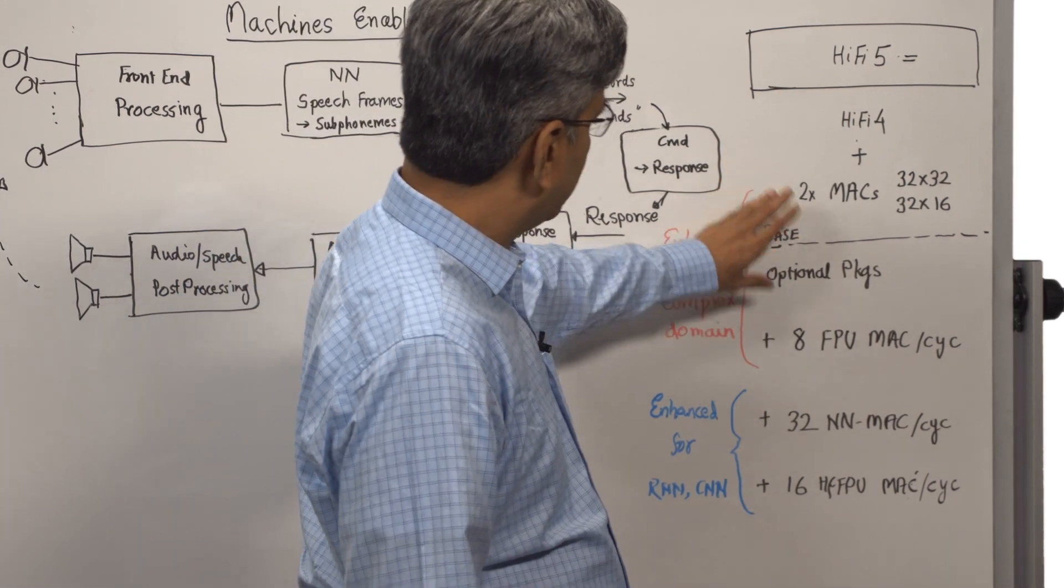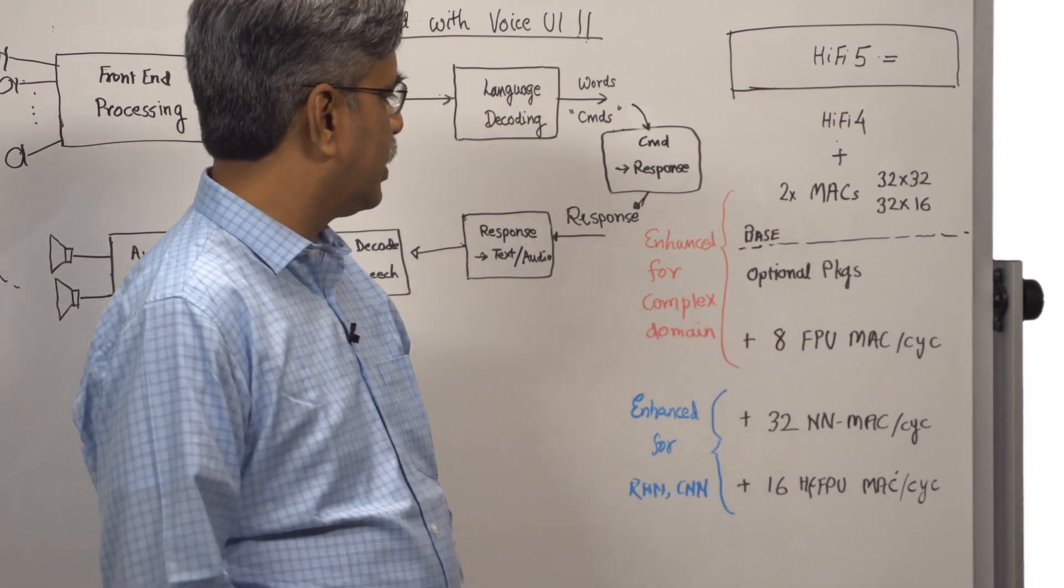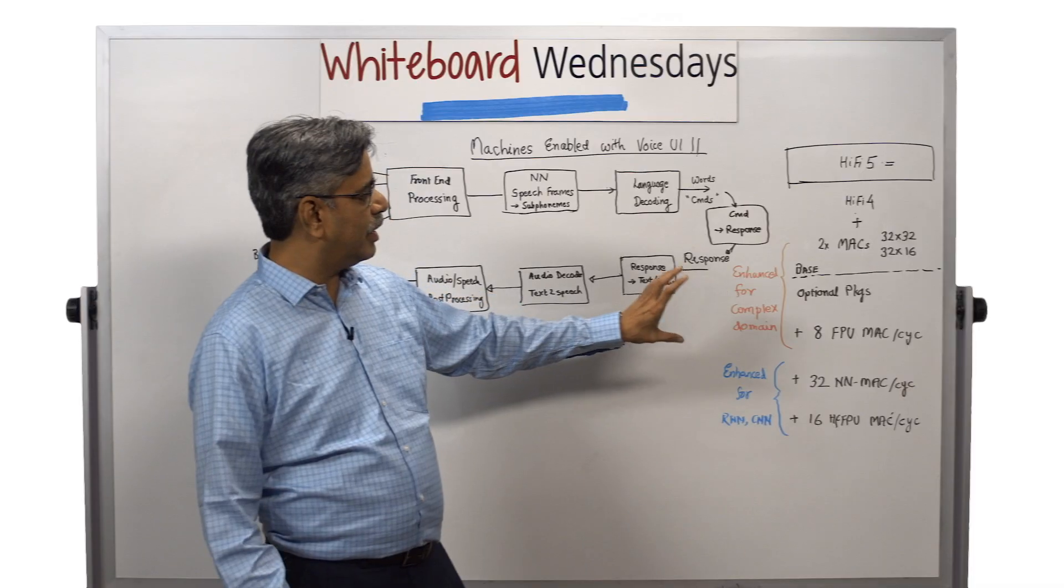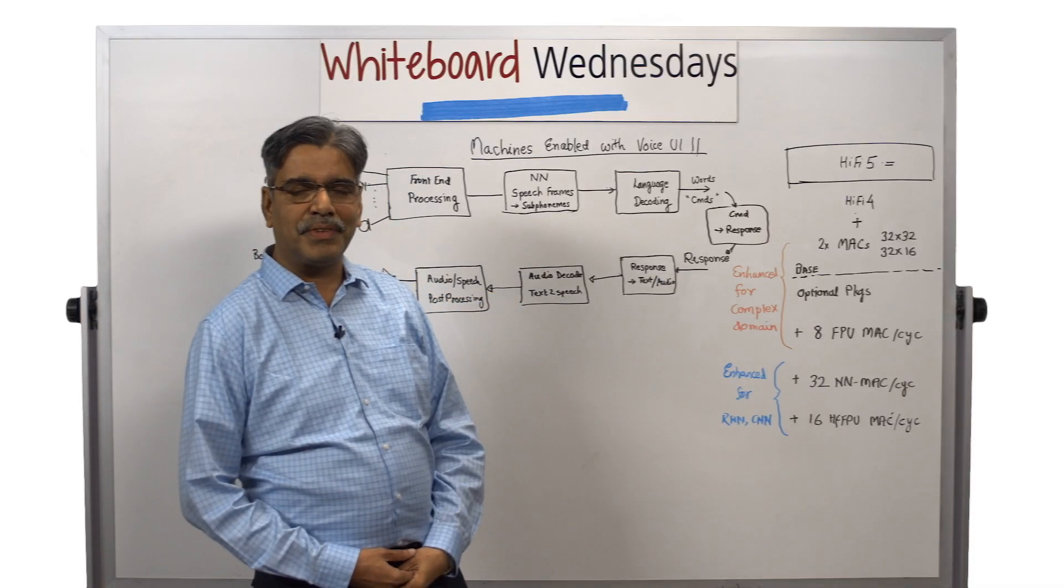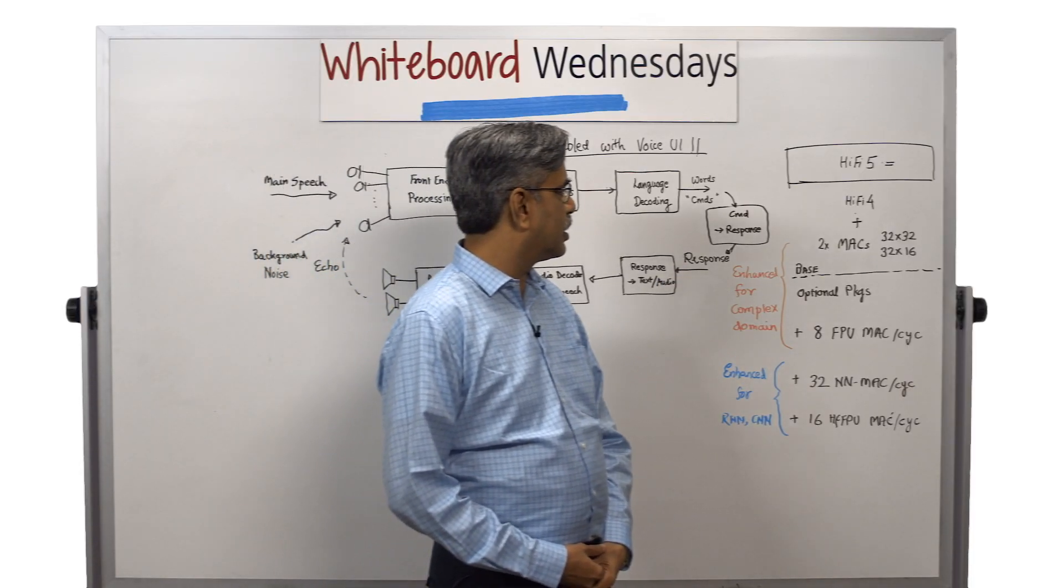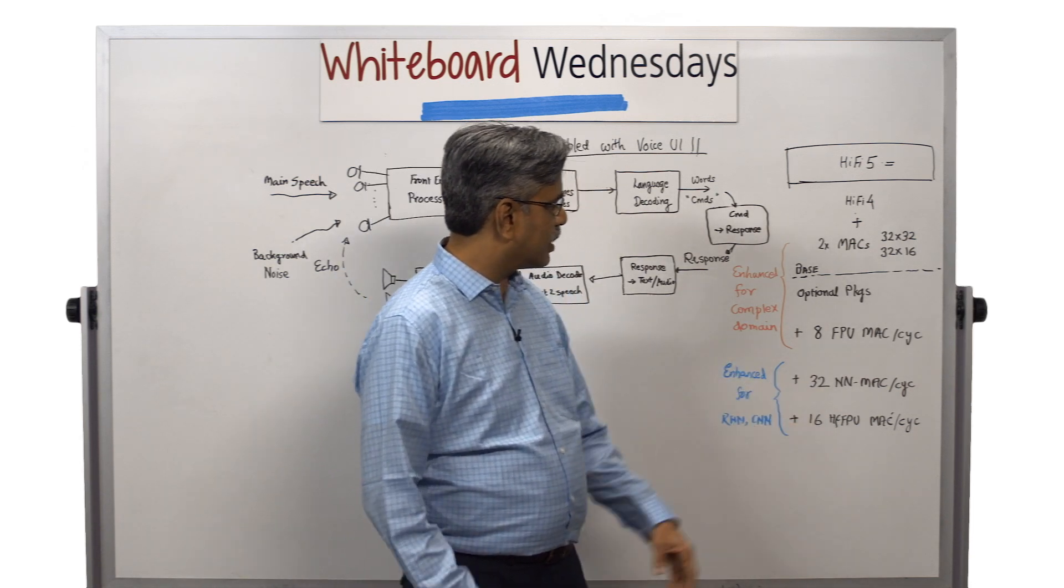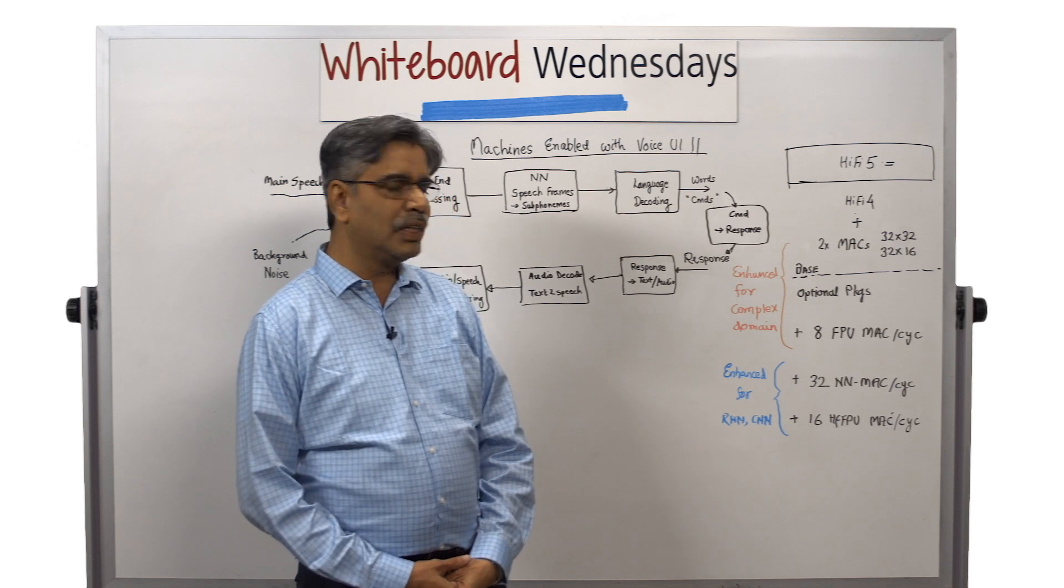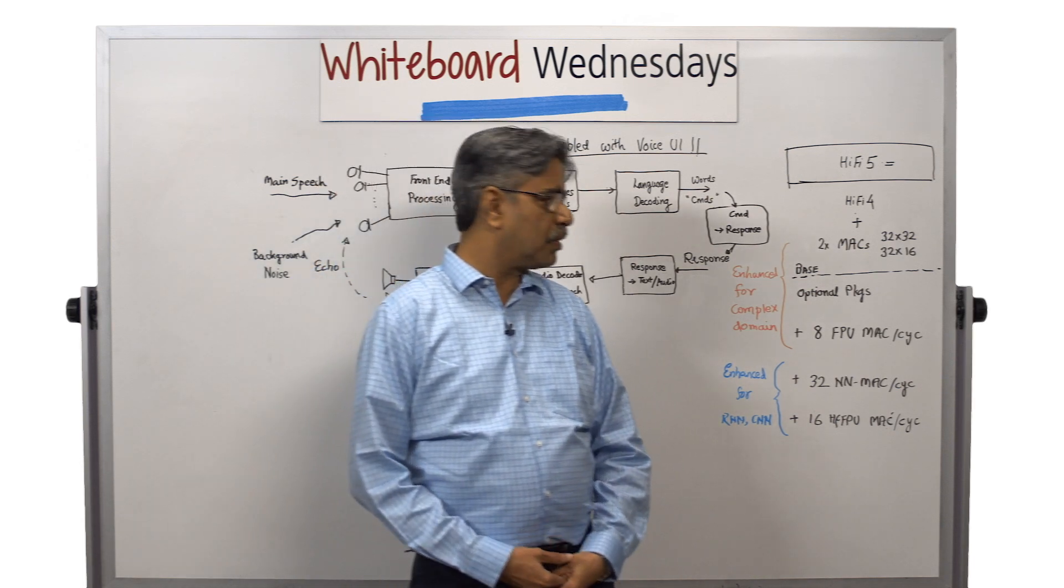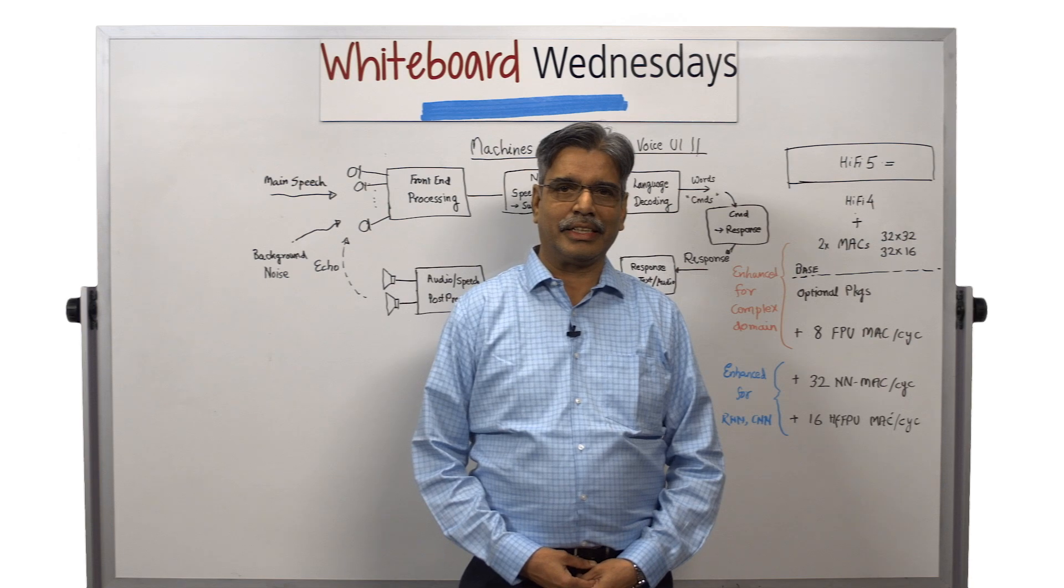The base plus optional floating point unit are enhanced for complex domain FFT pre-processing algorithms, and the NN-MACs and half-precision FPU are enhanced for two types of speech neural networks: RNNs and CNNs.